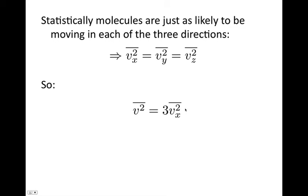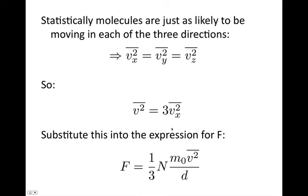This is useful because in our formula we had the average velocity in the x direction, so we can now replace V̄x² with V̄²/3. That's where the factor of 3 comes from — it's effectively coming from the three dimensions, the x, y, and z. So the force becomes (1/3d) × N × m₀ × V̄².